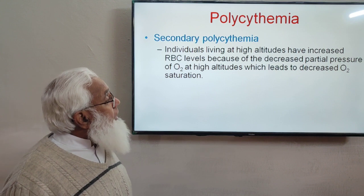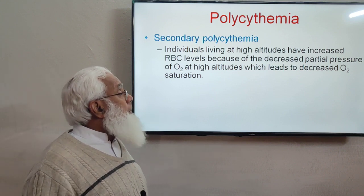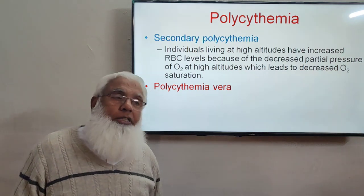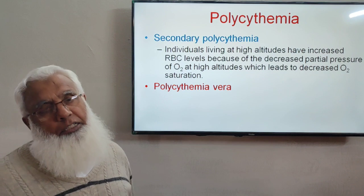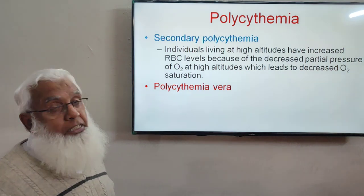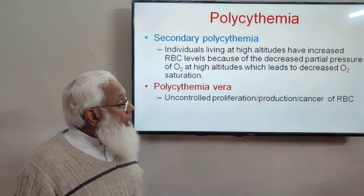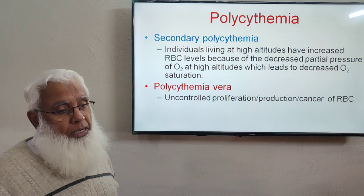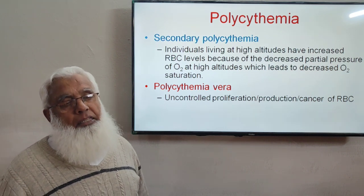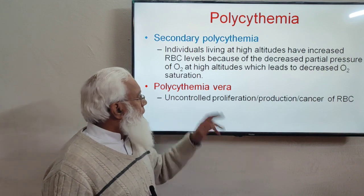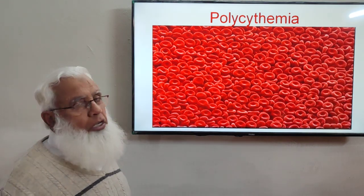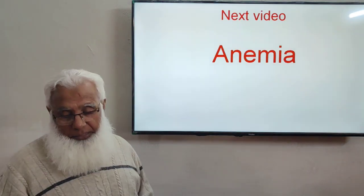At high altitude, decreased partial pressure of oxygen leads to decreased oxygen-carrying capacity, relative hypoxia, erythropoietin production, and stimulated RBC production — this is secondary polycythemia. Polycythemia vera, on the other hand, is an uncontrolled proliferation or cancer of RBCs — a rare condition. A large number of RBCs can clog blood vessels.